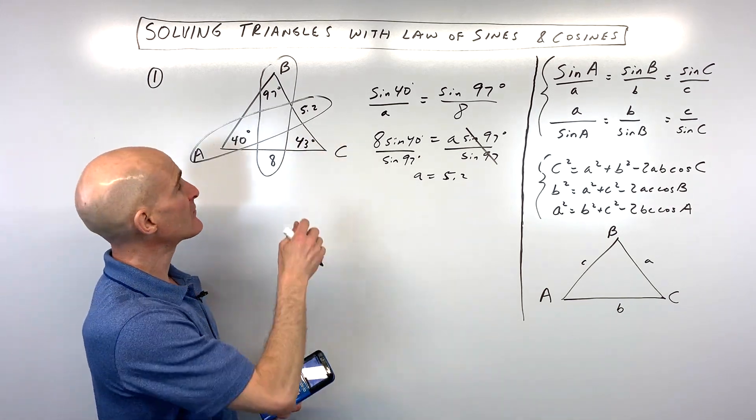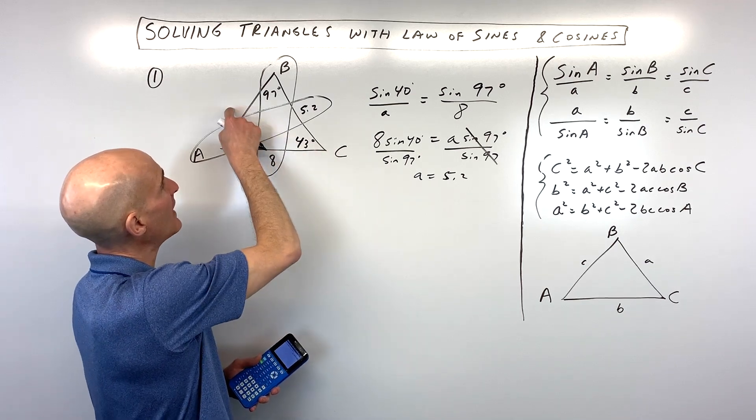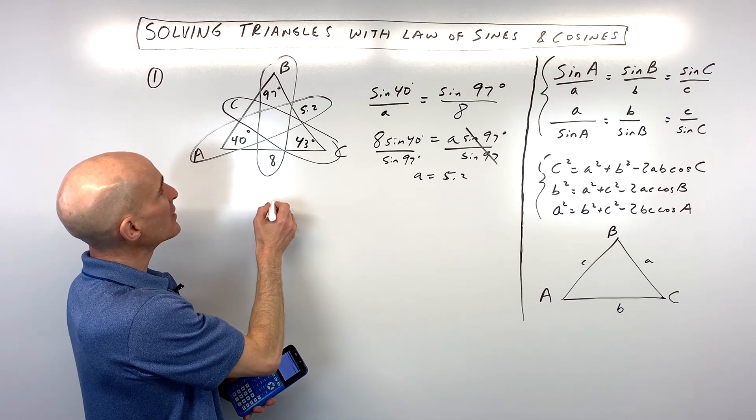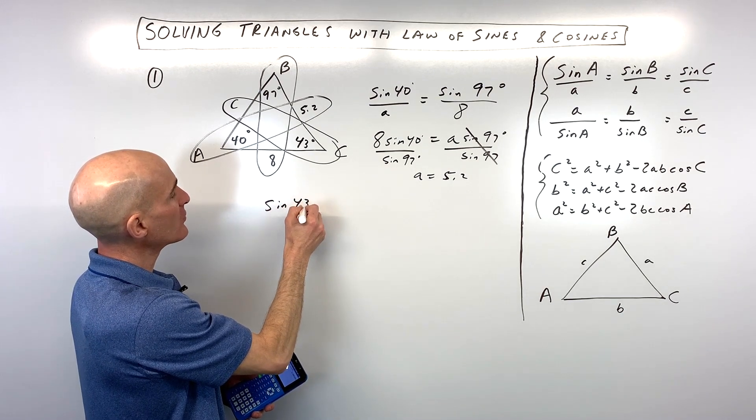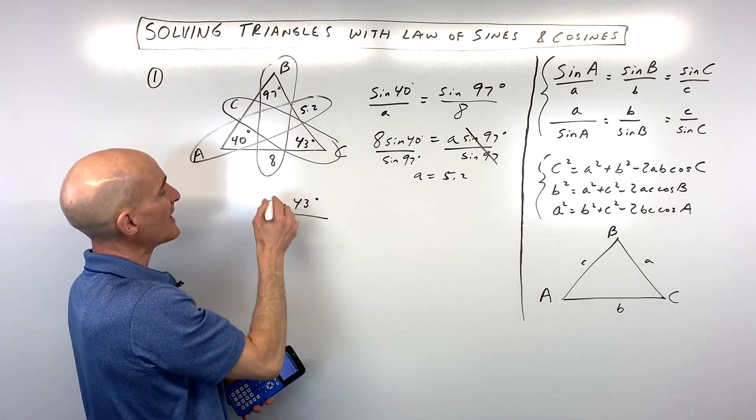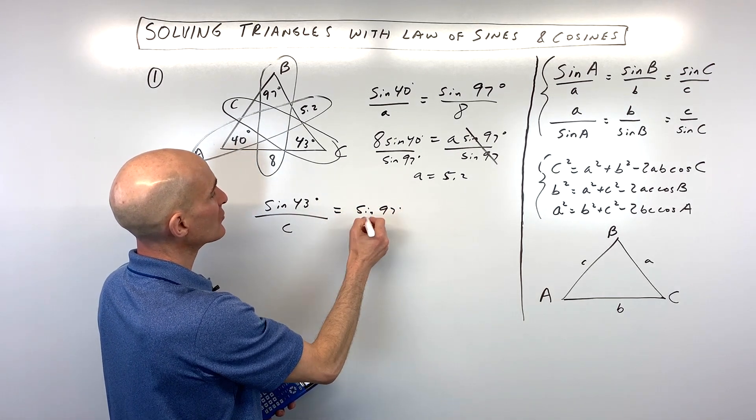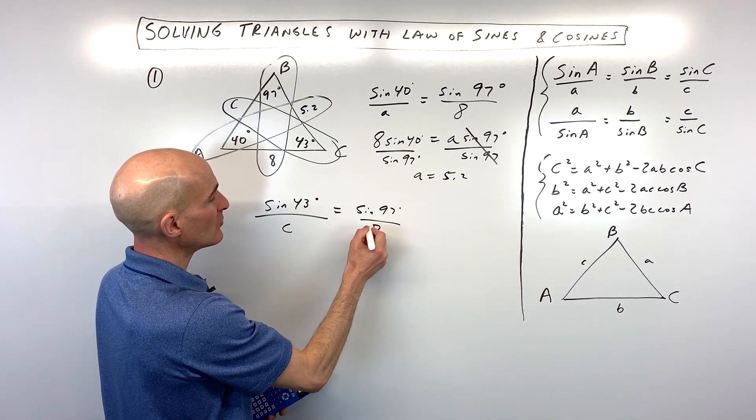Okay, just one side left to solve for. That's the side across from angle C, okay, which is side C. So, you can see we have another pair. And let's make another proportion. We have sine of 43 degrees over its side opposite C equals sine of 97 degrees over its side opposite, which is 8.